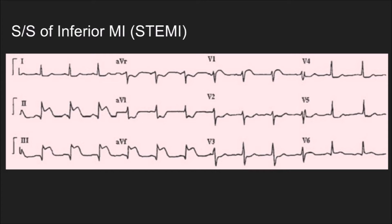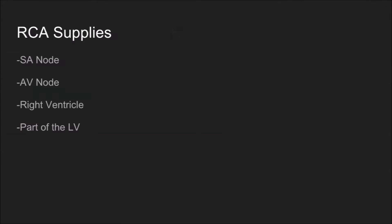The inferior wall of the heart is supplied by the right coronary artery. The right coronary artery supplies the SA node, the AV node, the right ventricle, and parts of the left ventricle, as well as other structures. We're sticking to the basics here.